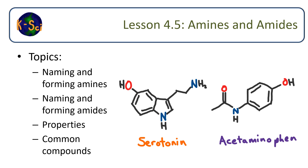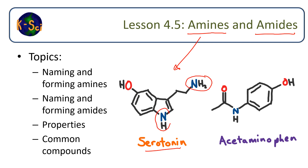Hello there! In this lesson we're going to learn about amines and amides. For amines I have serotonin as an example. Serotonin is a neurotransmitter that allows some nerve cells to talk to each other, and you can see these nitrogen groups on the structure of this molecule — that's what makes it an amine.